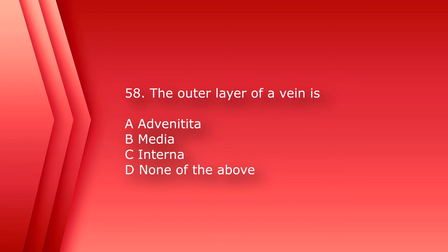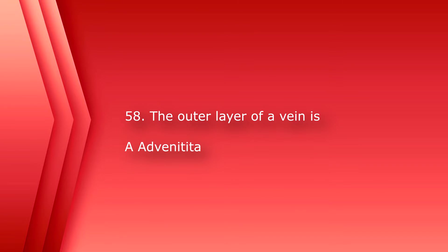Number 58: The outer layer of a vein is: A) adventitia, B) media, C) interna, or D) none of the above. The answer is A, adventitia — sometimes it can also be called the tunica externa.